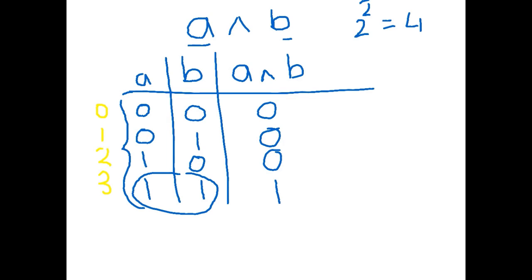So let's have a look at something a little bit harder. Let's use three variables. So we'll start off with just anding them all together to keep it nice and easy. So we're going to have a and b and c. Now using three variables, that means we have two to the three combinations, which is eight combinations.